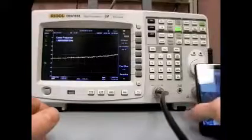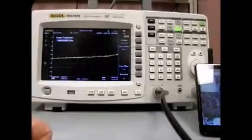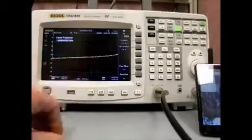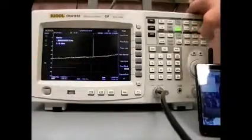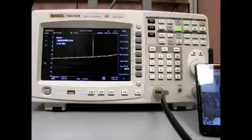So airplane mode is off, and you'll see that once we get full bars, we should get some transmission. And now we have a nice spike. I believe that that's at, let's do a peak, 1.865 gigahertz.